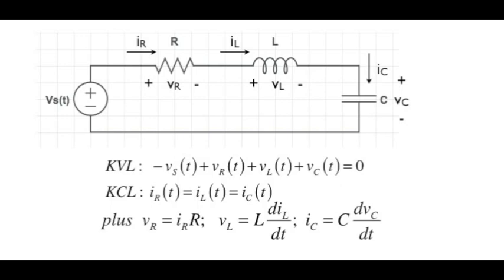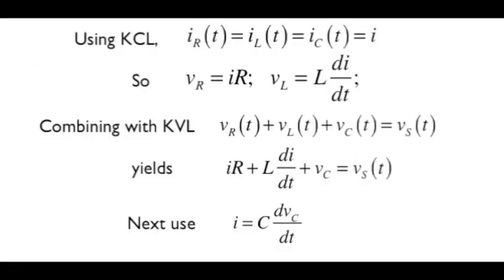Now let's add the constraints on current and voltage that the elements themselves bring. The resistor says V equals IR, the inductor has V equals L di/dt, and the capacitor current equals C dVc/dt. By KCL all the currents are equal, so V sub R is I times R, V sub L is L di/dt, and we can use those terms in KVL: IR plus L di/dt plus V sub C equals the source voltage.